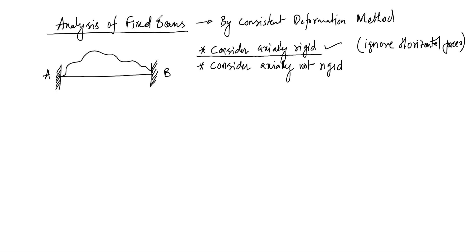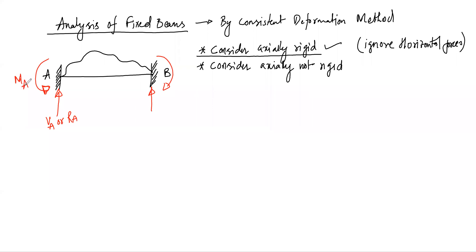When dealing with axially rigid beams, at fixed supports we will have one vertical reaction and one moment. Similarly, the other fixed support will have one vertical reaction and one moment. We call this vertical reaction RA and the moment MA on one side, and RB and MB on the other. The span is given as length L and flexural rigidity is given as EI.